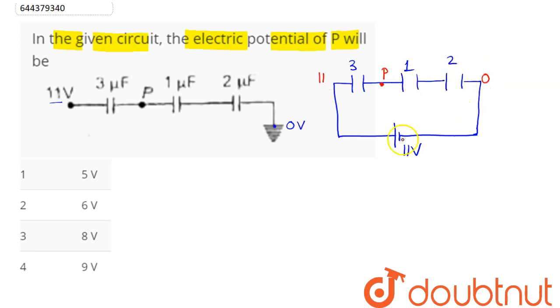To find the charge flowing out of this battery, we need C equivalent since these three capacitors 3, 1 and 2 are connected in series.